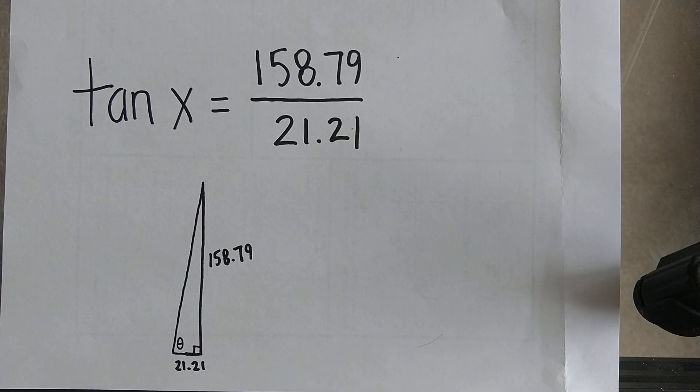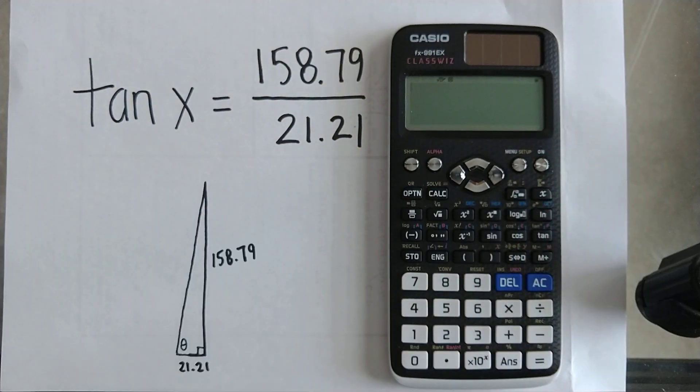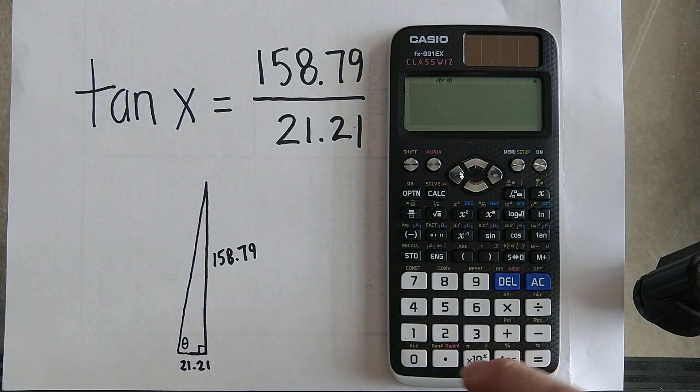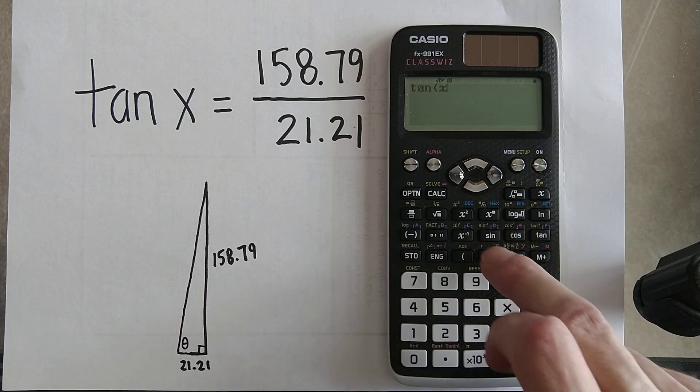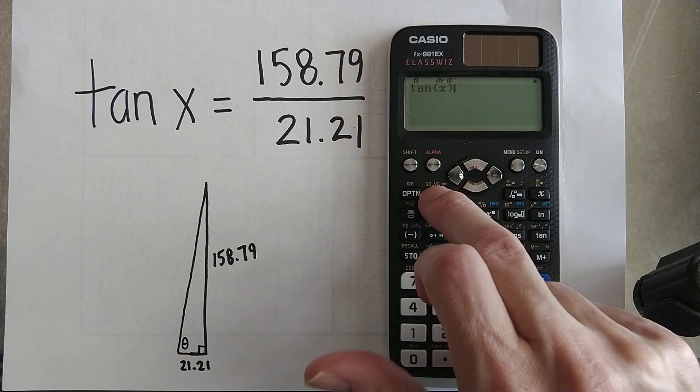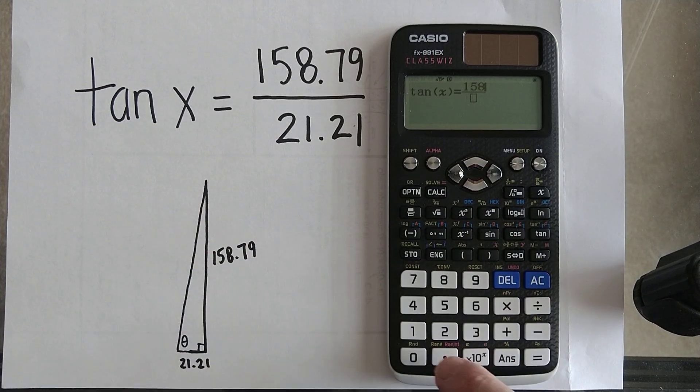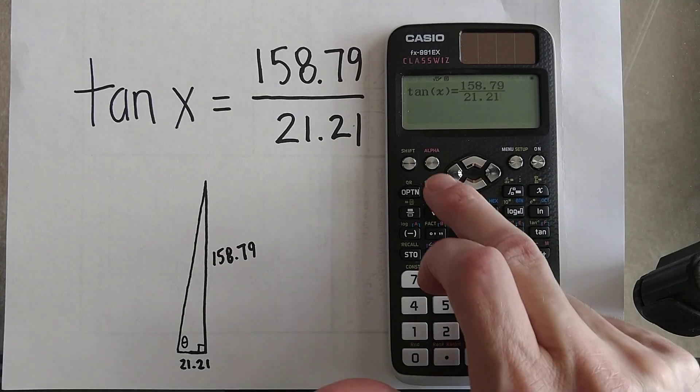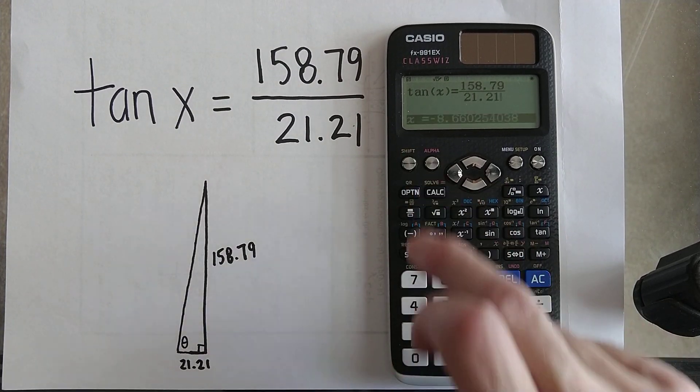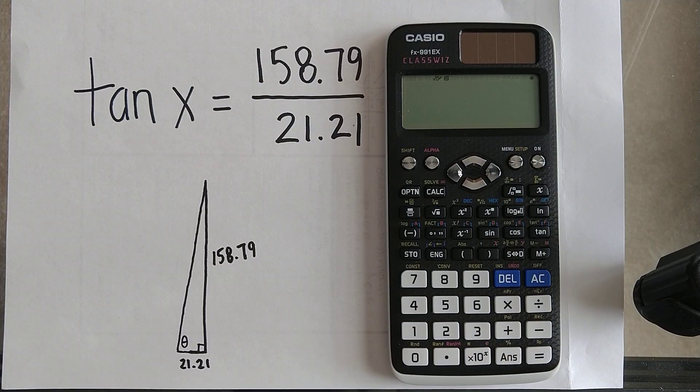Let's look at the Casio. Its solver's more intuitive. You do tangent, but you have to know to use this special little red equal sign, and then 158.79 over 21.21. Shift solve, give it a guess. I'm going to put zero since that's what we did on the other one.